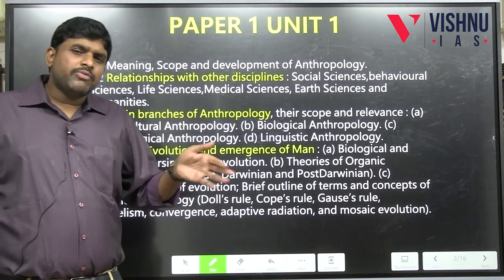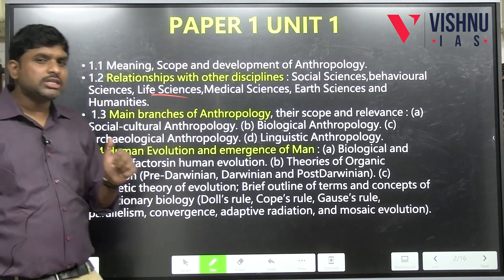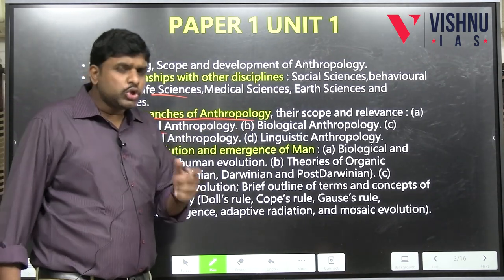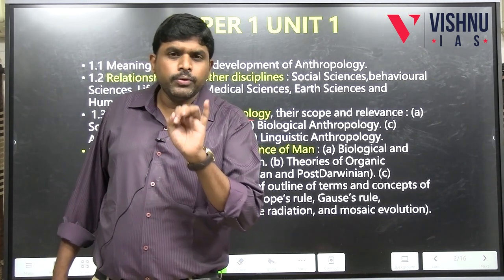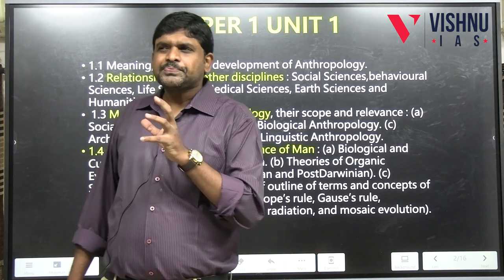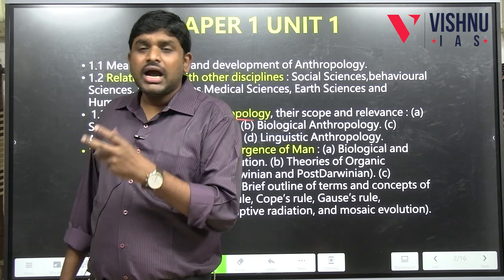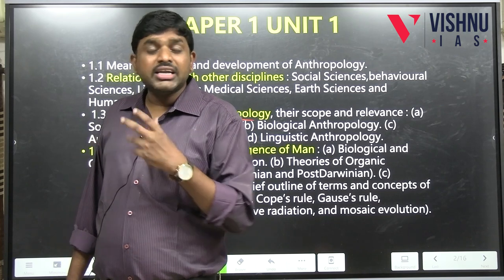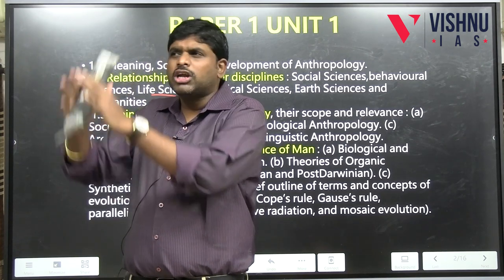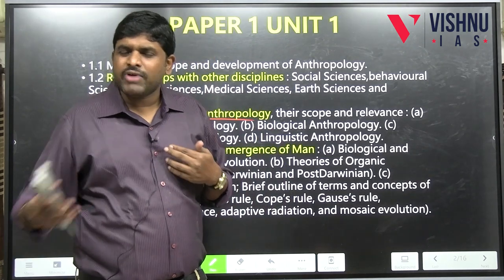Unit 1.3 covers the sub-branches or main branches of anthropology. The main branches include socio-cultural anthropology — which covers Units 2, 3, 4, and 5 together — encompassing understanding of culture, society, marriage, family, kinship, economic systems, political systems, and religion. So what are all the parts of socio-cultural anthropology? We'll be discussing this.